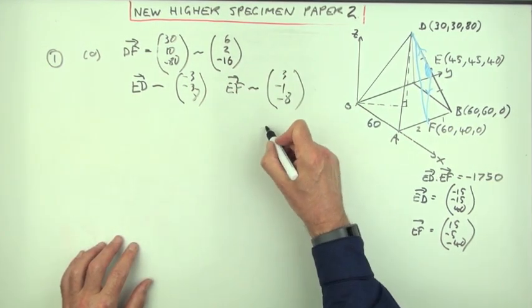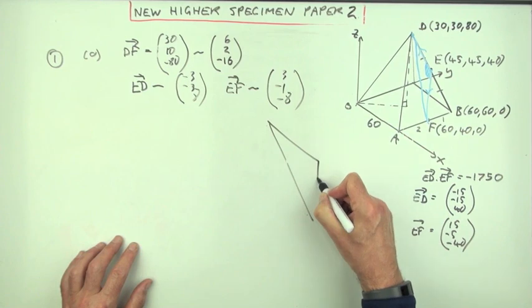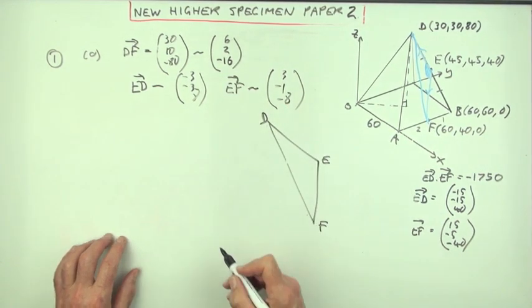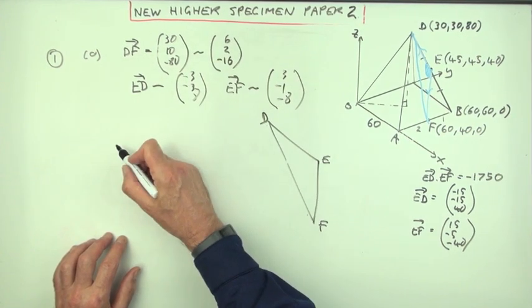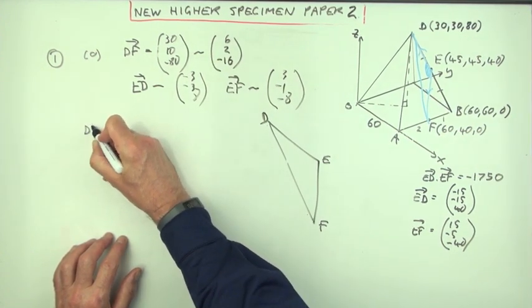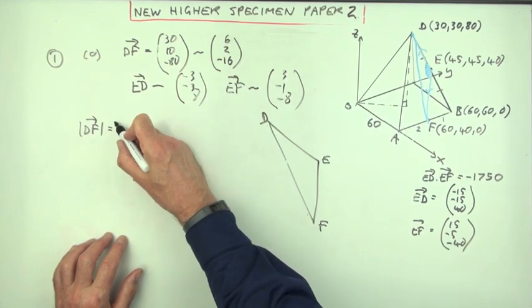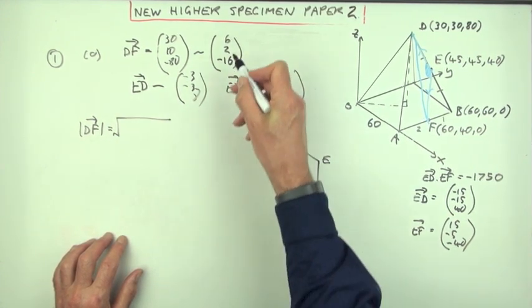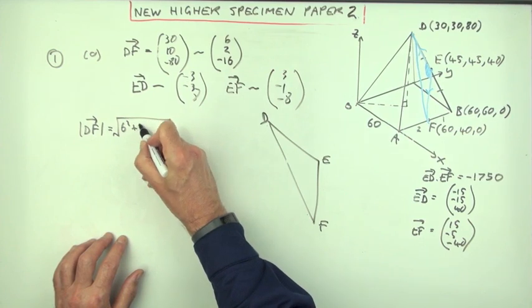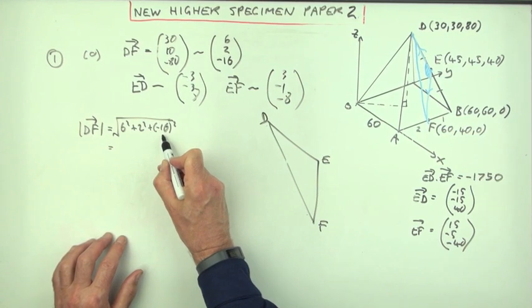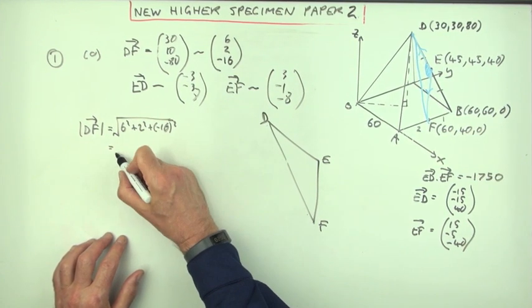I could use the scaled down sides. Now work out the lengths for this triangle here. So what would I have using these simpler numbers? Well, what's the length of DF in my scaled down sides? That'd be the square root of 6 squared, and 2 squared, and negative 16 squared. So that's 256, 260, 296.